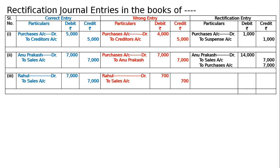Hence the entry type is correct but the amounts are wrong — it is less. We have to write down the difference: 7000 minus 700 equals 6300. Rahul debited to sales account 6300 each, both debit and credit. The narration will be: credit sale to Rahul Rs. 7000 was recorded as 700 and is rectified by the above entry. The journal total — totalling both debit and credit columns — will be 21300.